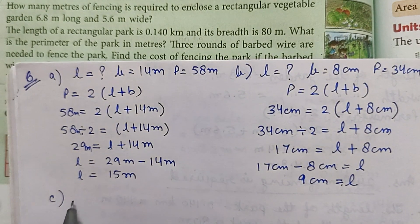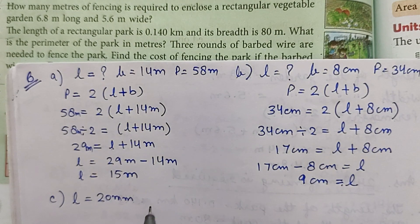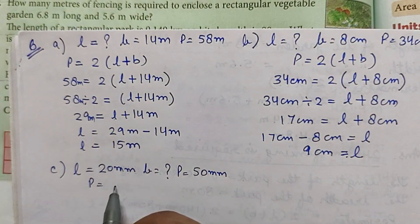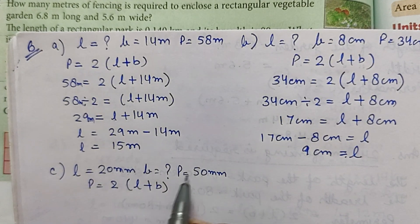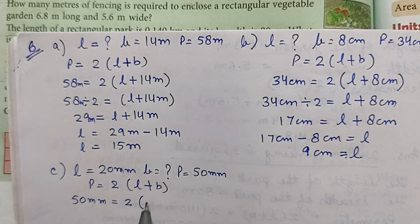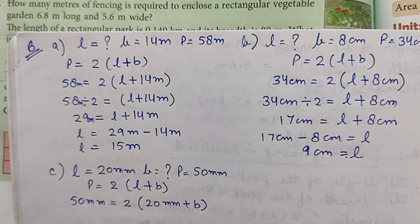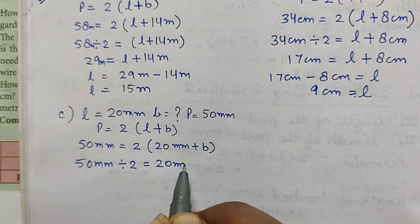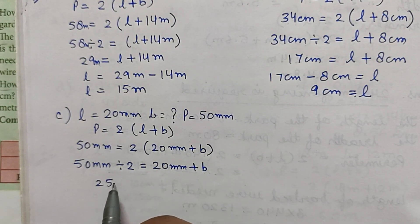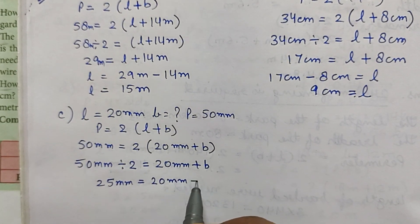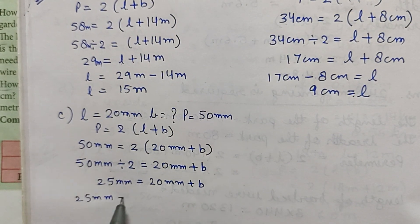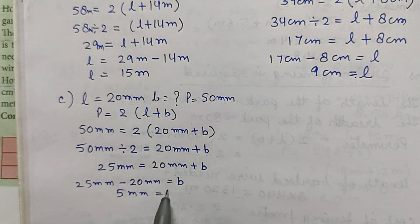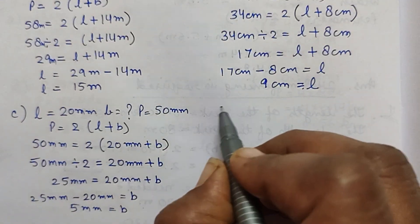Part C: length is given as 20 millimeters, breadth is not given, and perimeter is 50 millimeters. Perimeter formula: 50 = 2 into (20 + b). Dividing by 2: 25 = 20 + b. Therefore breadth equals 25 minus 20, which is 5 millimeters.